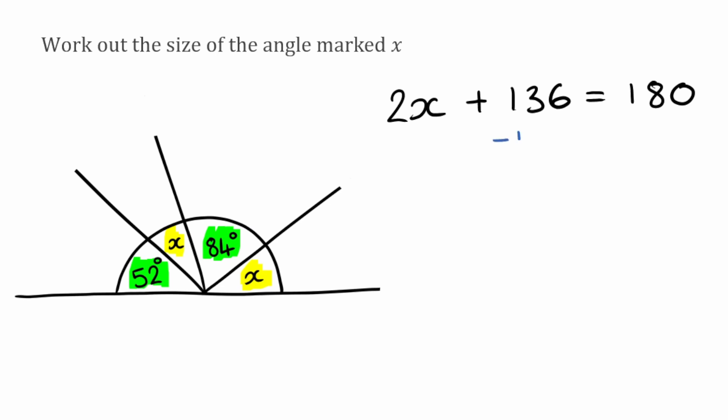So we're going to balance the equation. I'm going to take 136 away from this side and I'm going to do exactly the same on the other side. Well if I do this here I'm now left with 2X on the left hand side is equal to 180 take away 136, which leaves us with 44.